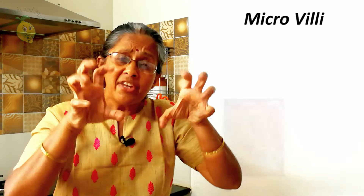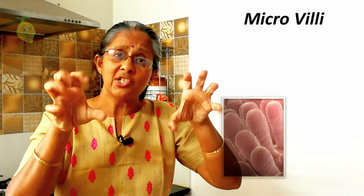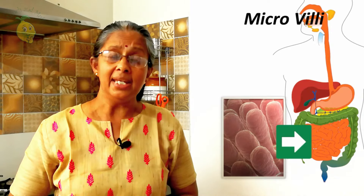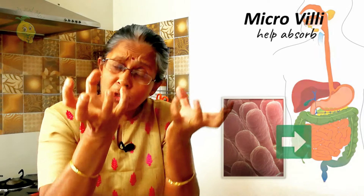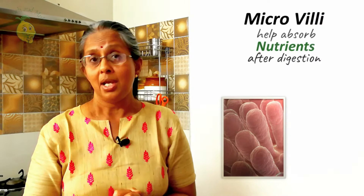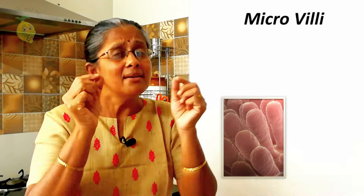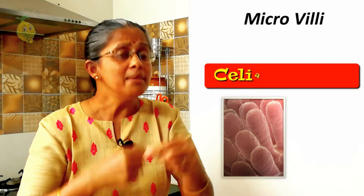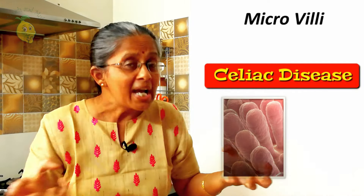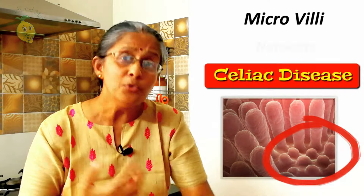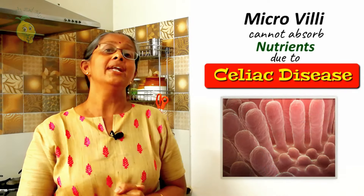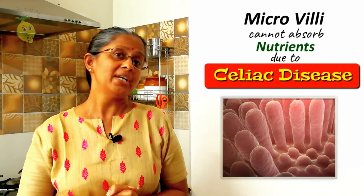Microvilli are finger-like projections present in our small intestine that help to absorb the nutrients after digestion. As a result of this immune response, the microvilli get destroyed and thus nutrients are not able to get absorbed in the small intestine.